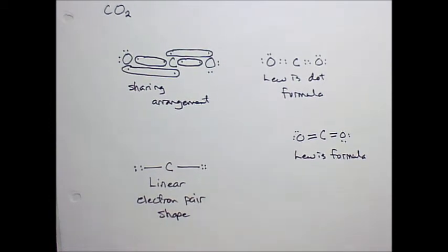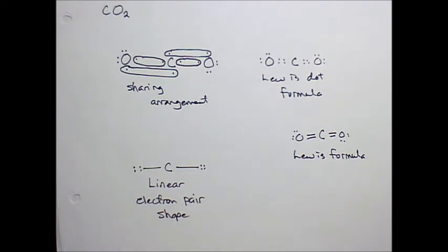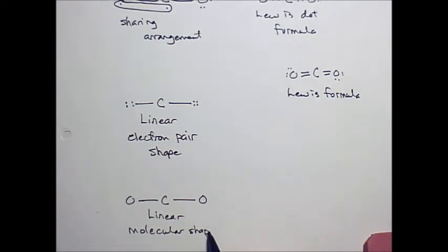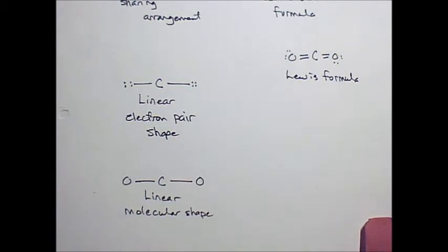So you're going to replace both sets with the symbol. So this is still a straight line, so it's still linear. But we don't have any electron dots left, so this is a molecular shape. It's a molecular shape.